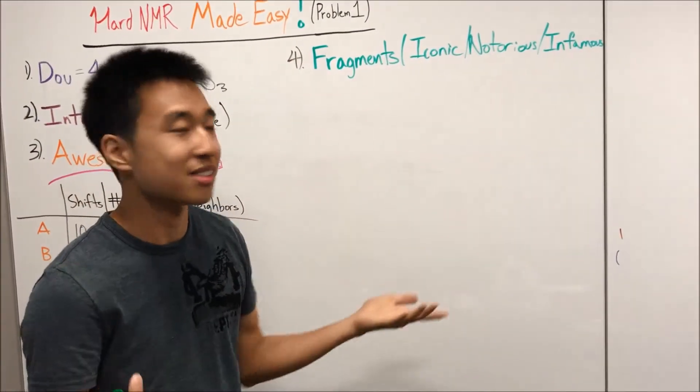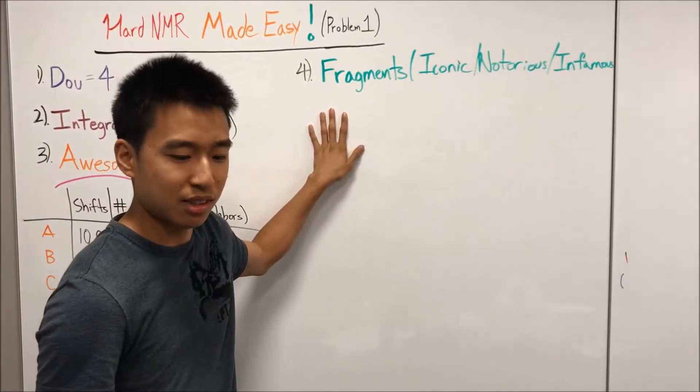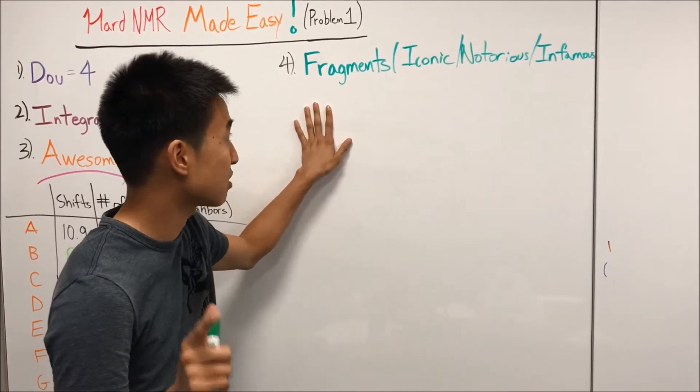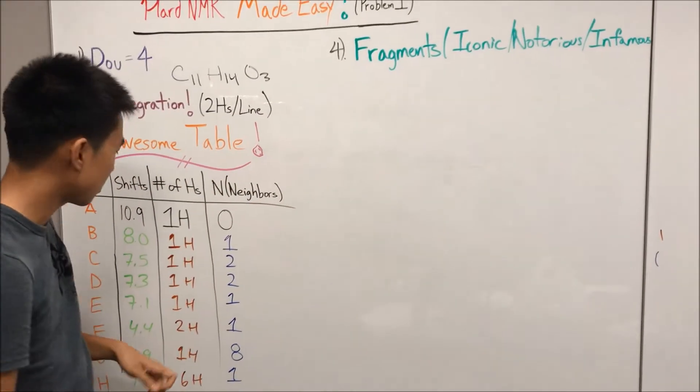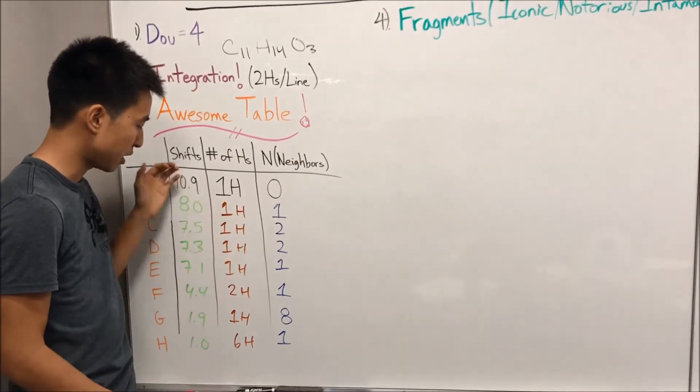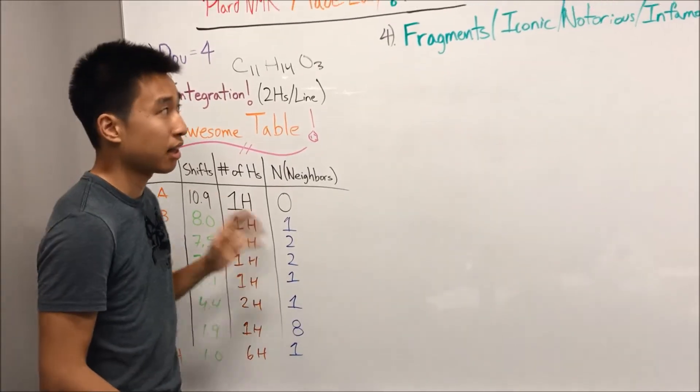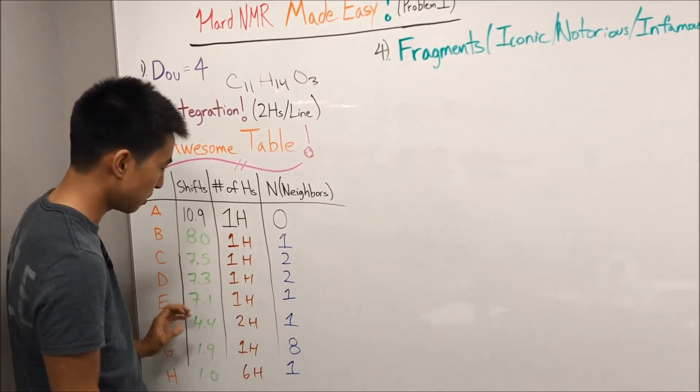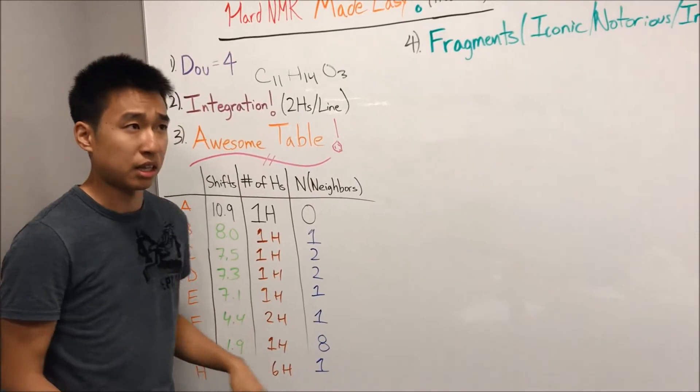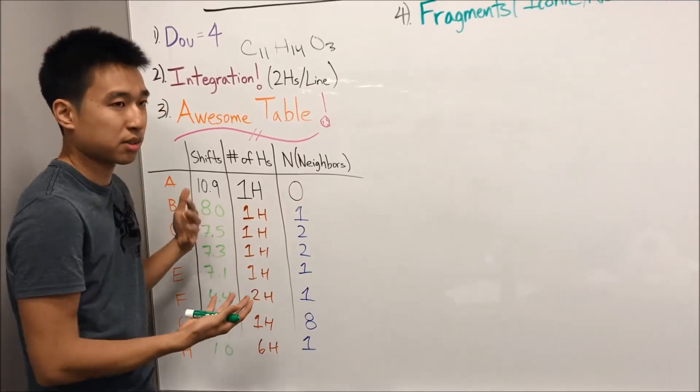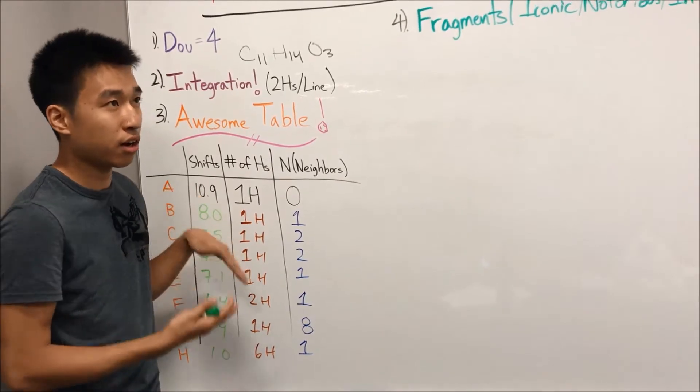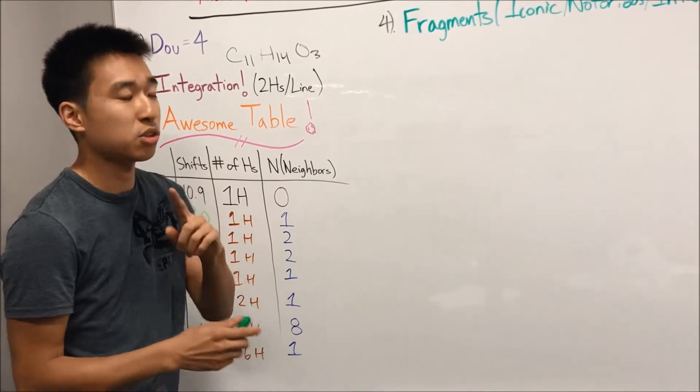Step 4 in solving this problem is fragments. This is what I learned in these last 3 years. You don't want to look at shift tables yet at all. The common mistake is to start browsing through a shift table and see what these things can be. But a lot of times that gets really confusing, especially because a lot of things fall in the 2 to 5 range. I'll teach you what I mean by fragments.